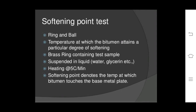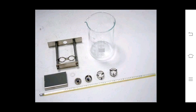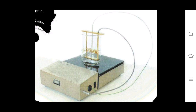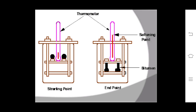Softening point test — also called the ring and ball test: it is the temperature at which bitumen attains a particular degree of softening. A brass ring containing the test sample is suspended in a liquid (water or glycerin) and heated at 5°C per minute. The softening point is the temperature at which bitumen touches the base metal plate. The temperature is recorded at the starting point before heating and at the end point after testing.